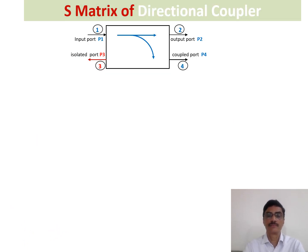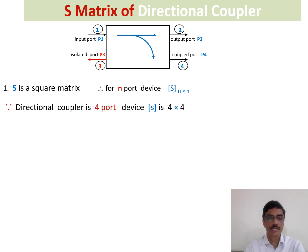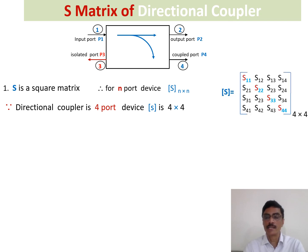Let us write the S-matrix for a 4-port directional coupler. We use the properties of S-matrix one by one. The first property is that the S-matrix is a square matrix; for any device with N ports, its matrix will be N by N in dimension. Since our device is a 4-port device, it will have a 4 by 4 S-matrix. The diagonal elements S11, S22, S33, and S44 are the reflection coefficients observed at each port.